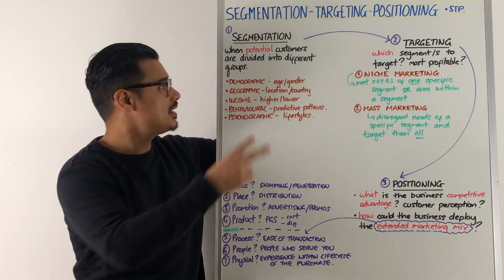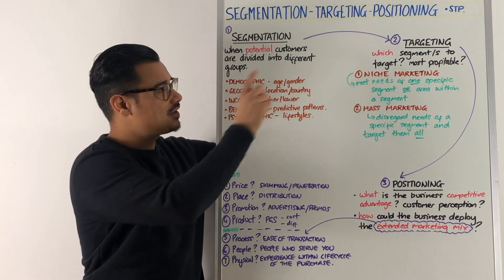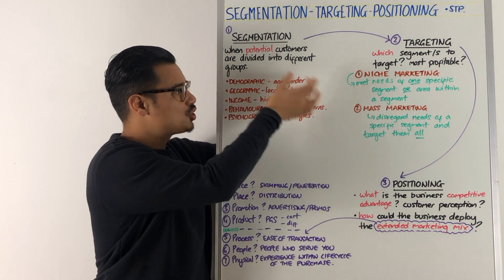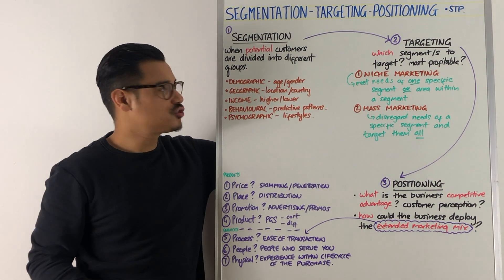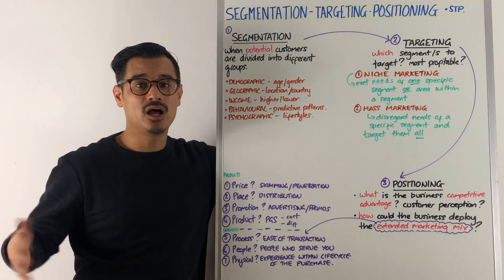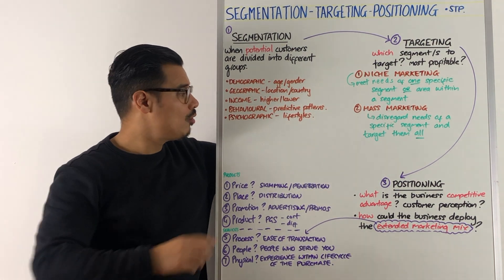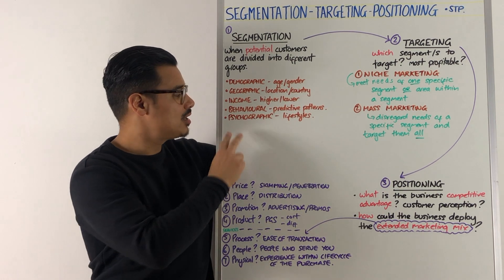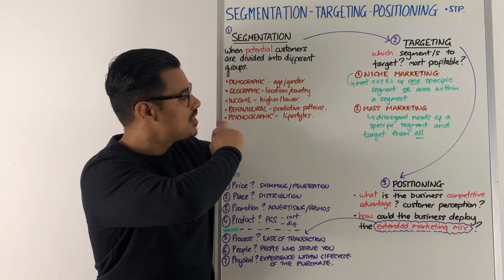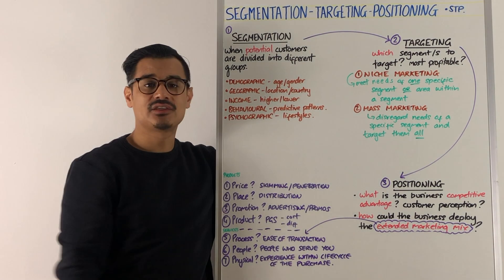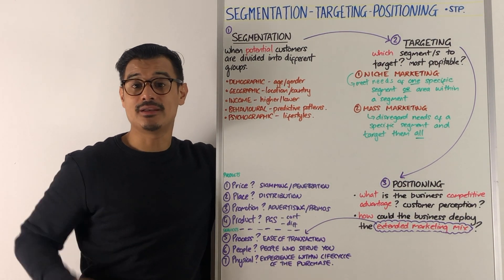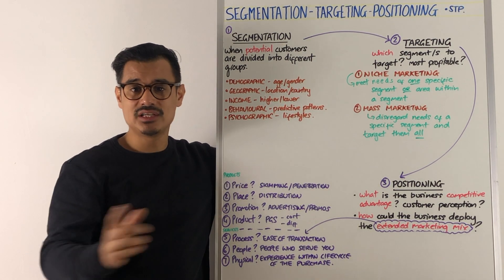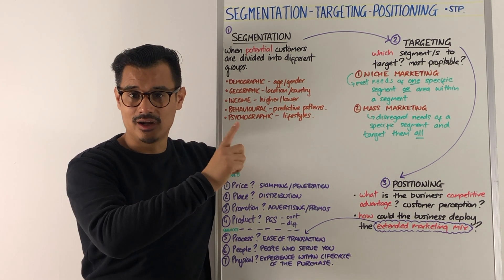Those segments could be demographics — so age or gender — geographic, so the location or the country they're in, income — higher or lower — behavioural, so predictive patterns in the consumer or consumers, and psychographics, so particular lifestyles they're interested in. So that is segmentation. For more details on that, click the card up there.